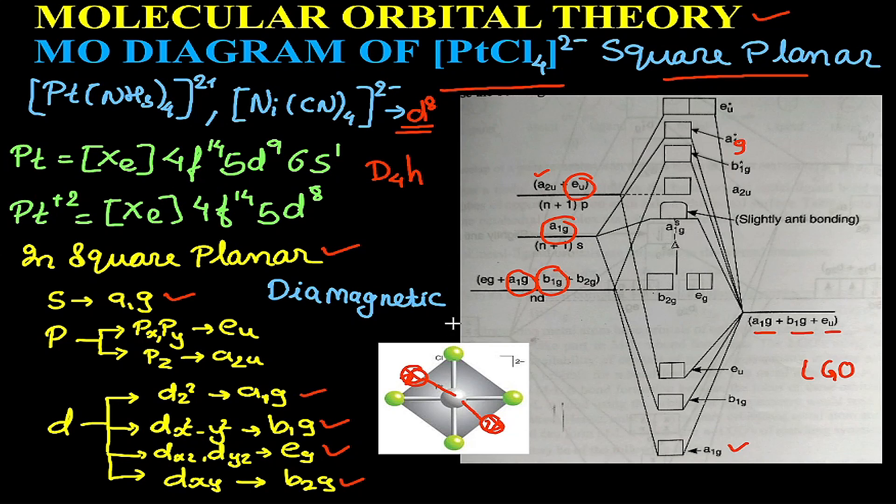Now talking about PtCl₄²⁻ molecule, the electronic configuration of platinum—atomic number 78—is [Xe] 4f¹⁴ 5d⁹ 6s¹. In this particular complex, the electronic configuration of platinum +2 will be [Xe] 4f¹⁴ 5d⁸.